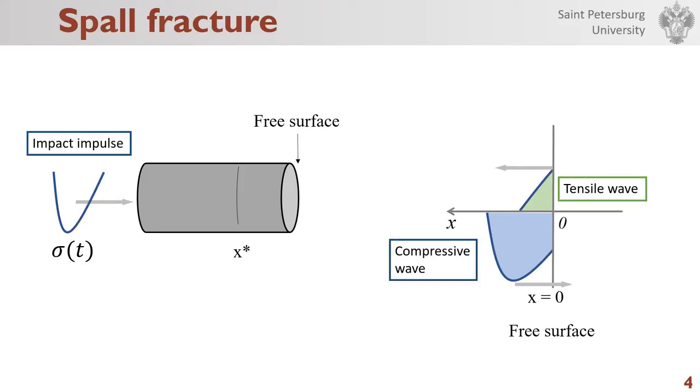The impact impulse creates a compression wave in a sample. The wave propagates along the sample axis until it reaches a free surface. Upon reflection from the surface, the compression wave reverses sign and propagates backward as a tensile wave.